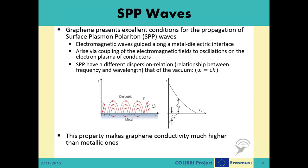Once launched, these SPP waves ripple along the metallic-dielectric interface and do not stray from this narrow path. Compared with the incident light that triggers the transformation, the SPPs can be much shorter in wavelength. In other words, when SPs couple with a photon, the resulting hybridized excitation is called an SPP. This SPP can propagate along the surface of a metal until energy is lost, either via absorption in the metal or radiation into free space.